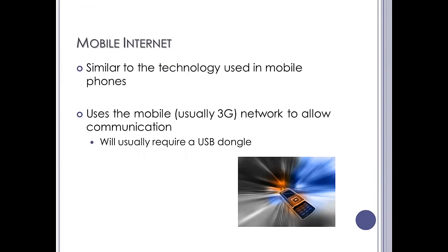Mobile internet is very similar to your mobile phones. For example, if you worked away from home and you had a laptop, and you weren't in range of a local Wi-Fi hotspot, you can get a USB adapter that plugs into your USB port and essentially, like a mobile phone, would allow you to access usually a 3G network. You may get 4G ones now, so that would allow your machine to have some internet connection.